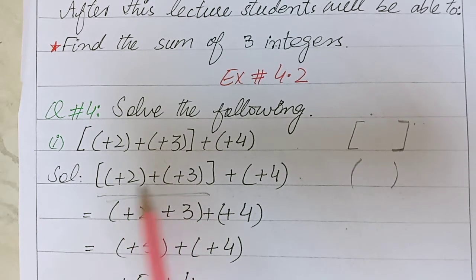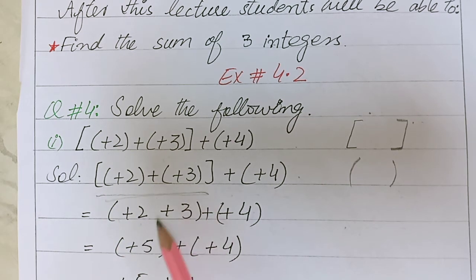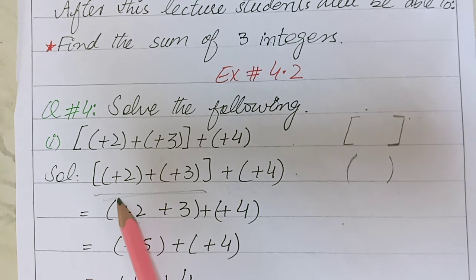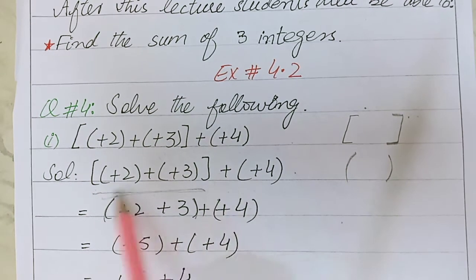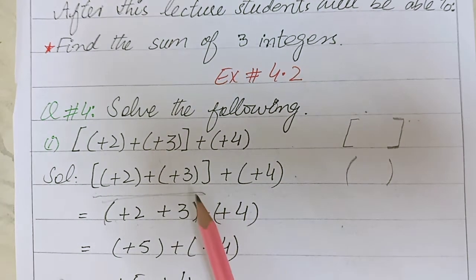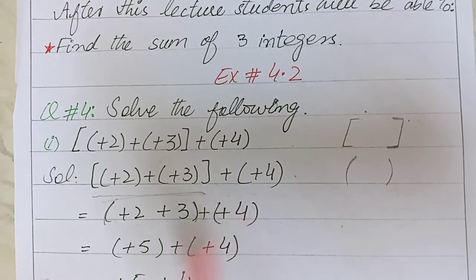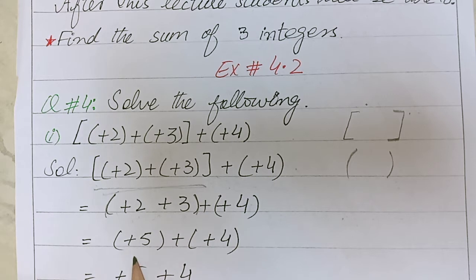So let's start: (+2) + (+3) in round brackets. This bracket is showing we solve these two values first. +2 plus +3 is equal to +5, and the remaining data...